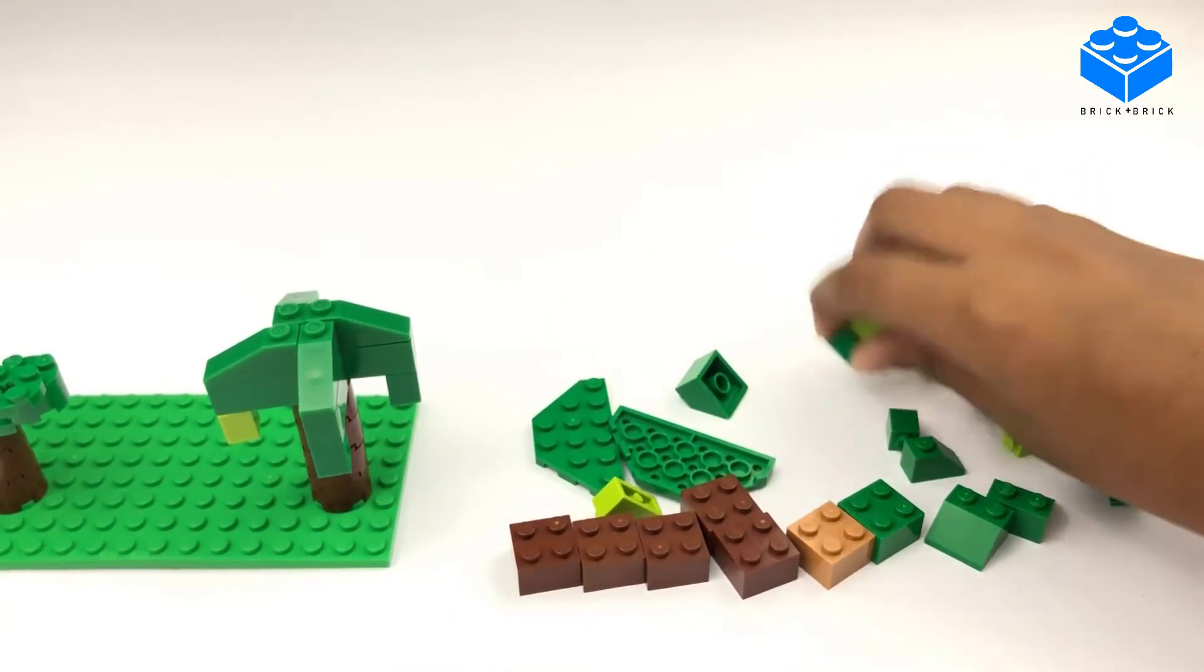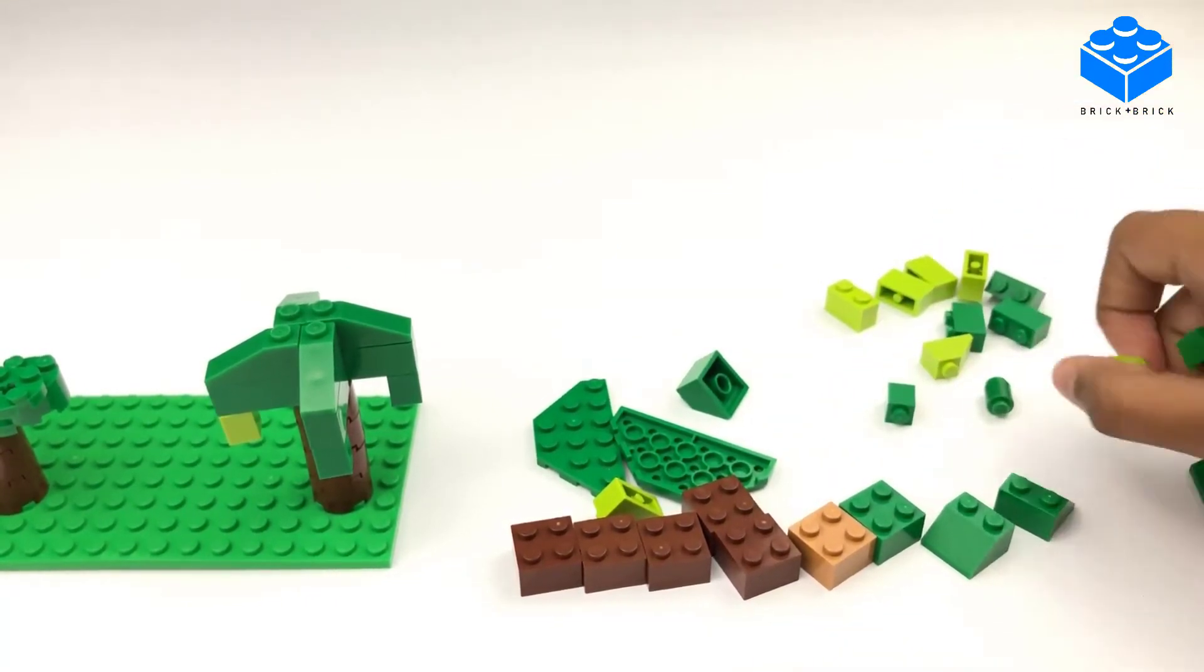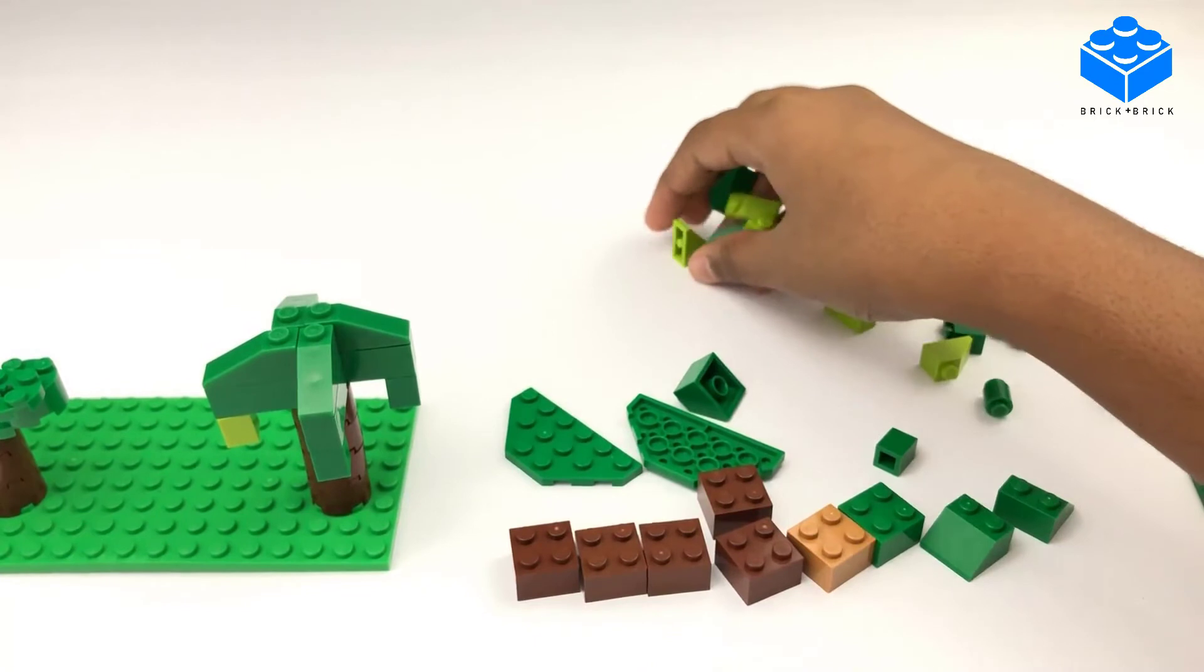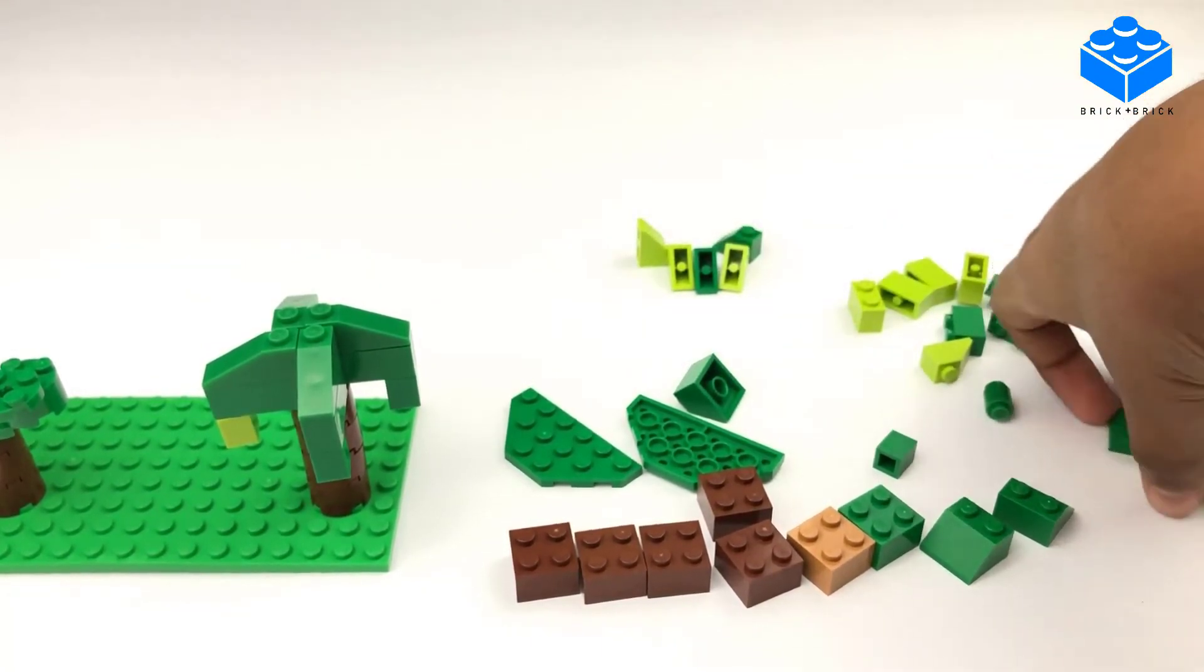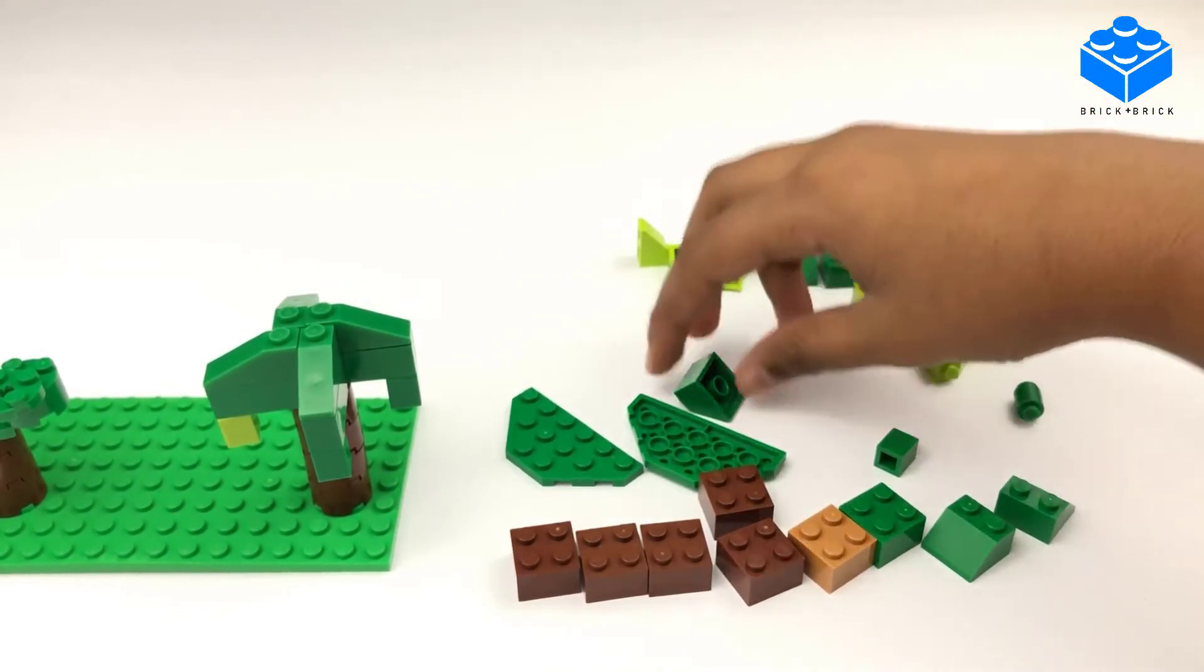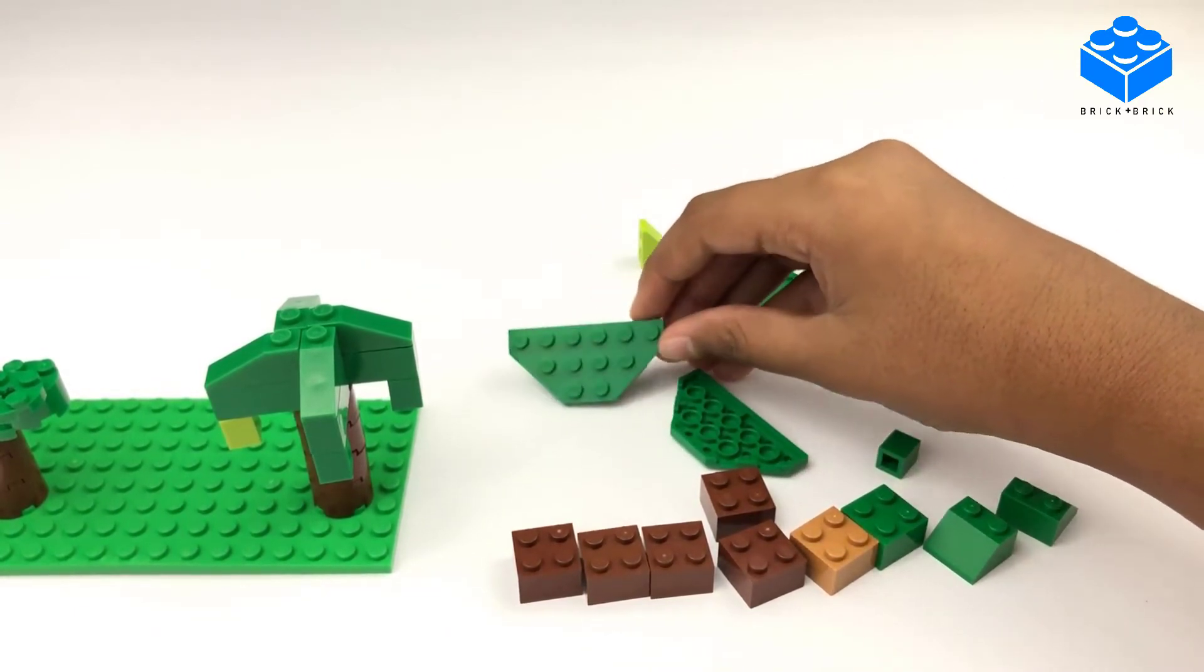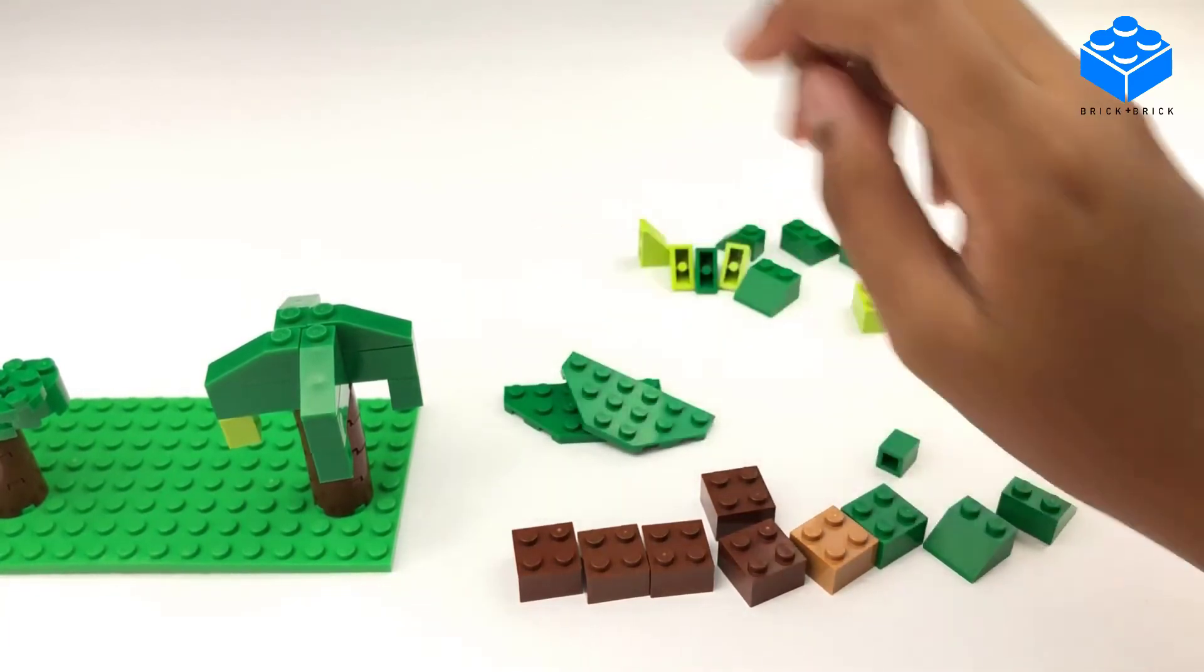One by twos. One, two, three, four, five one by two slope pieces. Two, two by two slope pieces. And a third one. And a third one. And two triangular pieces. Like this.